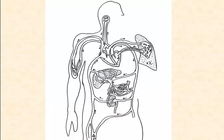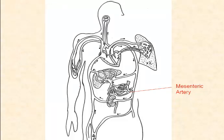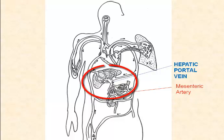We have some exceptions in the body, and we're going to take a look at one called the hepatic portal system. In the hepatic portal system, the mesenteric artery delivers oxygenated blood to the small intestine, but there is no corresponding mesenteric vein. Instead, the deoxygenated blood goes directly to the liver via the hepatic portal vein. You may be asking yourself why, because this seems awfully inefficient — it might seem to make more sense to have the deoxygenated blood go directly into general circulation.